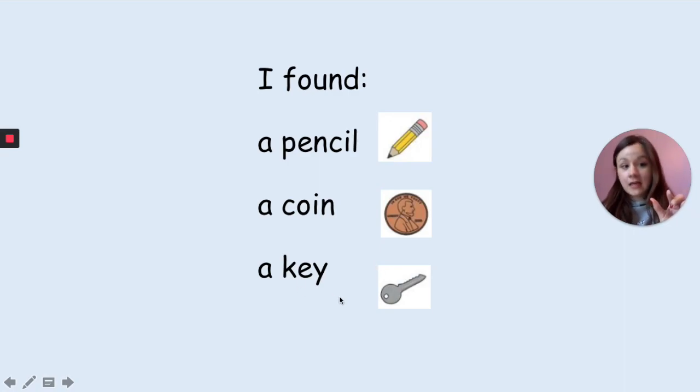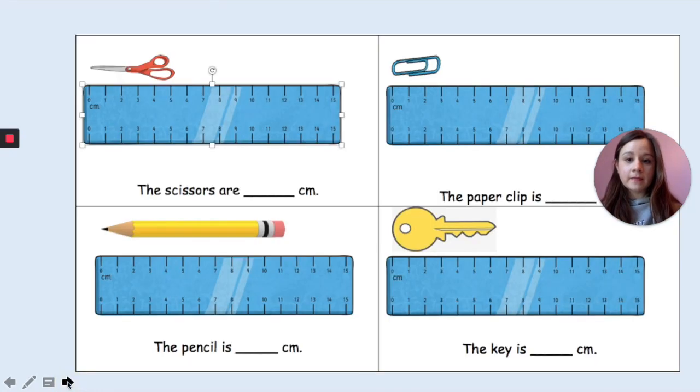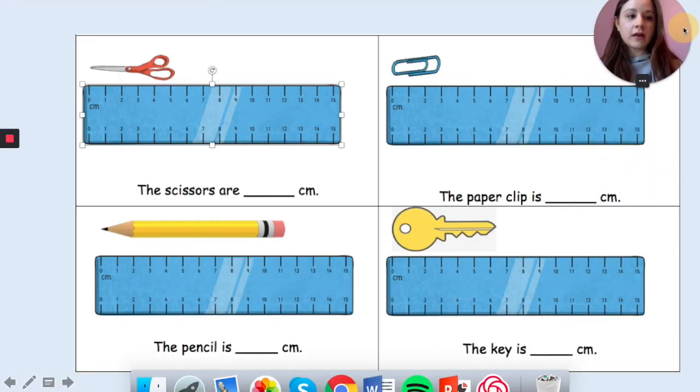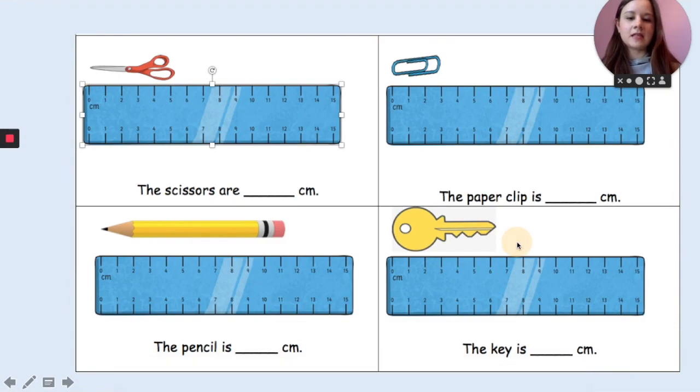Now here's some of your work for today. We are going to measure using these rulers. The scissors are—remember, look at zero and then which number does it land on—the scissors are something centimeters. The paper clip is something centimeters, the pencil is something centimeters, and the key is something centimeters.